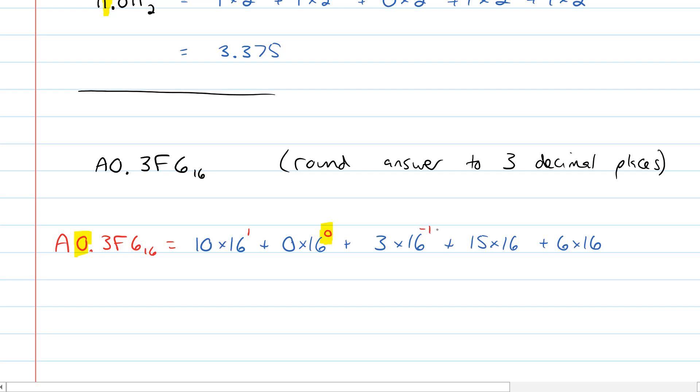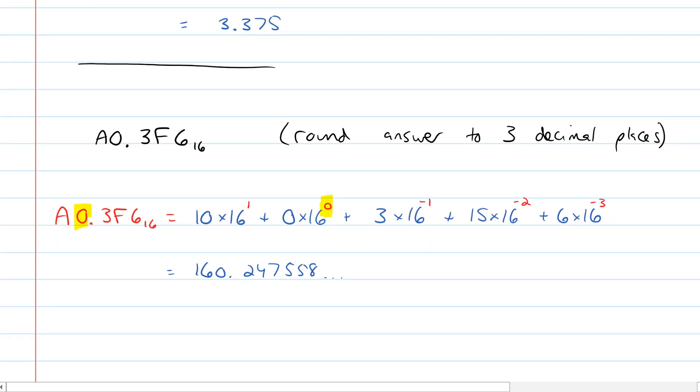Now if you throw that into your calculator, you'll get that it's quite a long string of decimal places in the decimal system, 160.247558, and it just keeps on going, but recall that we wanted to round our answer to 3 decimal places, and so it's going to be approximately 160, and you could use an equal sign here, honestly a lot of people do. I do like to use the approximate sign for things that we've rounded off, 160.248.